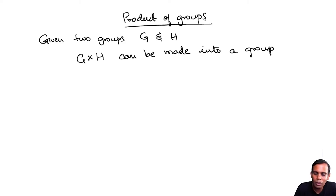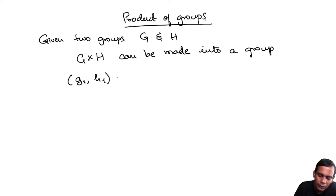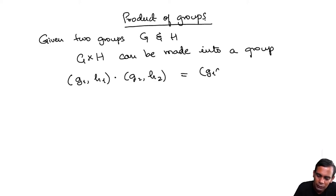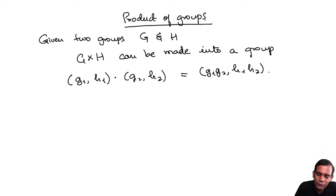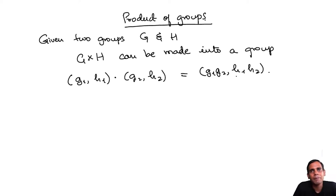I just need to tell you what is the group law on G cross H. You can take (G1, H1) and multiply it by (G2, H2), and the answer is you just do it component-wise: G1·G2 comma H1·H2. You can easily check that this satisfies the group axioms — this product will be associative, will have an identity, and every element will have an inverse.